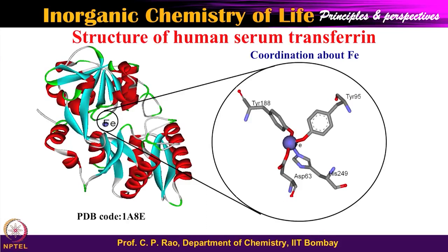Let us go back and look at what we have seen earlier. One example I showed is transferrin. This whole structure is a protein, and there is a metal ion at the center. If I zoom into the ion region, the blue center is the iron ion, and you have connectivity to red and blue groups around it. These are: a side chain of tyrosine, another side chain of tyrosine, a side chain of histidine, and a side chain of aspartic acid.